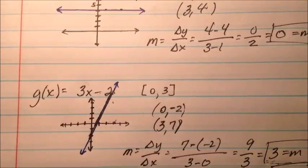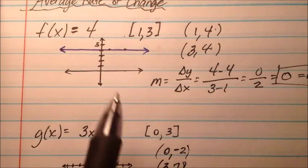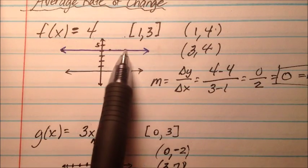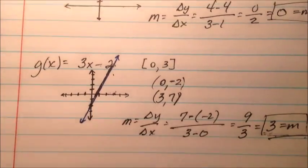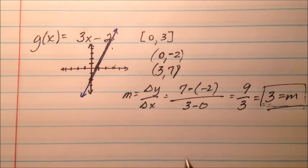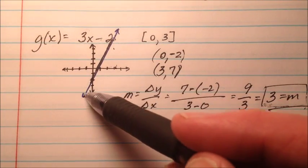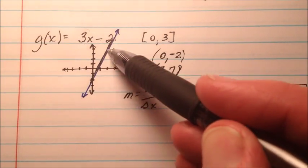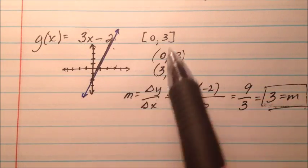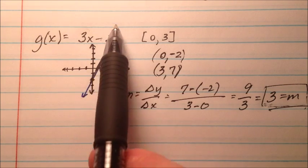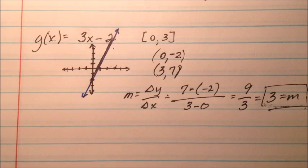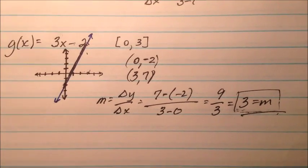So the first example was just a horizontal line with no change whatsoever. The second one was degree 1 — a linear function — so it's going to have a constant change over its entire domain, which is just 3 in this case.